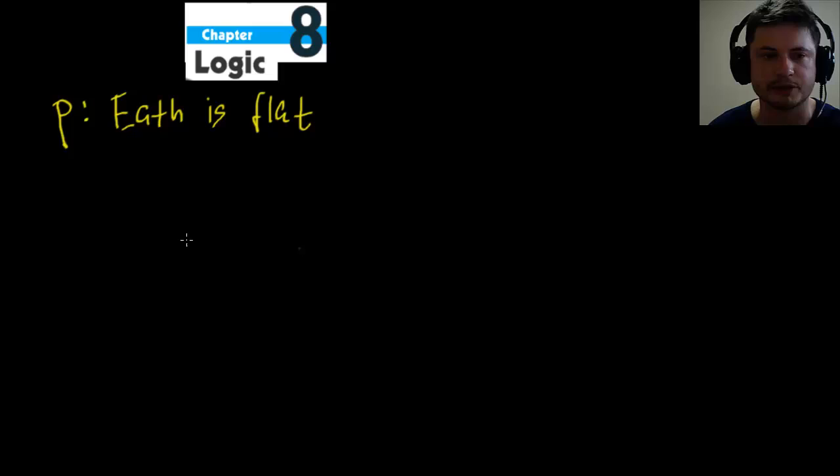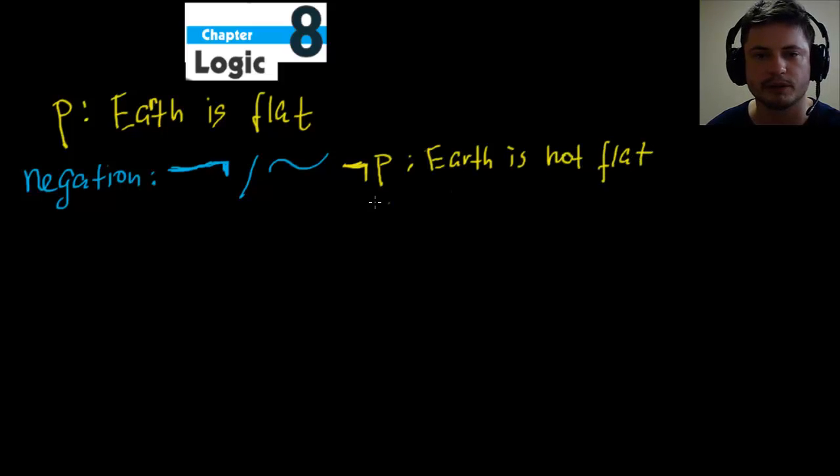Now in logic, we have something called negation. And negation is basically the opposite of the proposition. In other words, it's like saying not. Negation refers to as not. In the book or on your test, it'll be written like this, like a little line with a little line here. On your paper, you can actually do either this or you can also write it like this. So this is not. And here, not P. I'm going to write it like they do in the book. Not P is that Earth is not flat. And that's really it. That's what negation means.